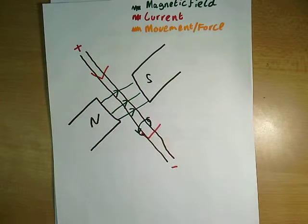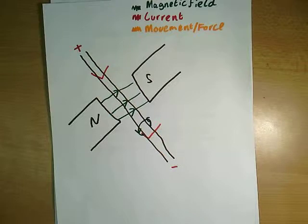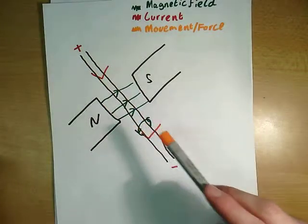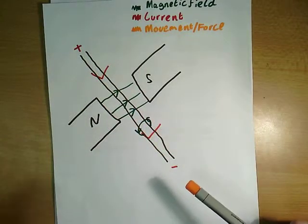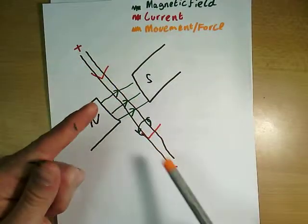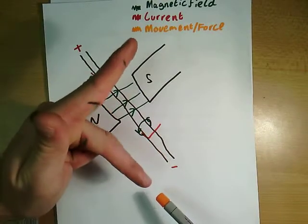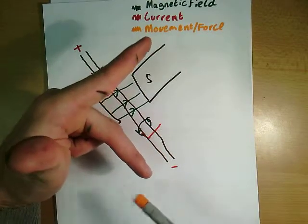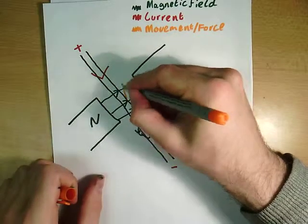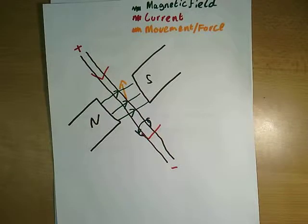Those two magnetic fields are now in place around each other, and that is going to cause them to interact with each other. Then we use Fleming's left-hand rule to show us which way the wire is going to jump — is it going to go up or down? We use first finger for field pointing north to south, second finger for current positive to negative, and then stick your thumb up or down. You can see this wire is going to jump up out of the page.